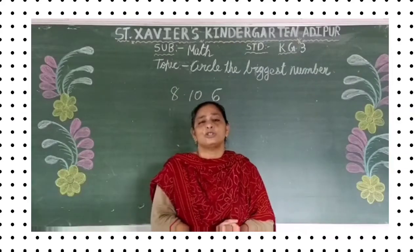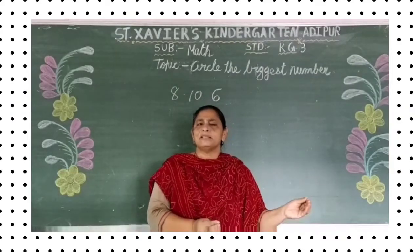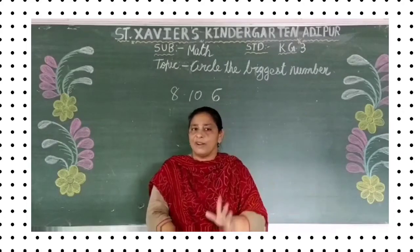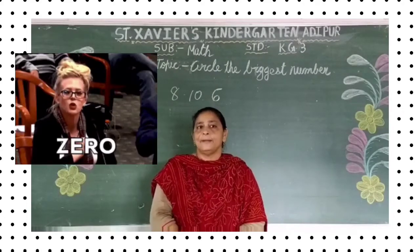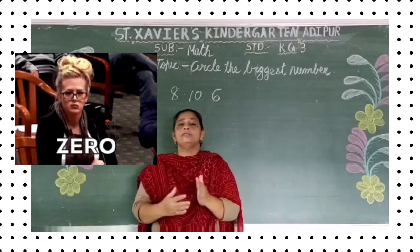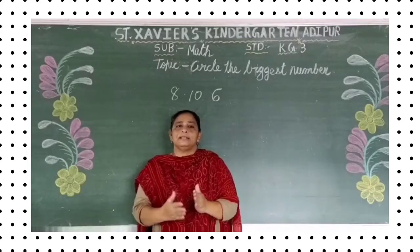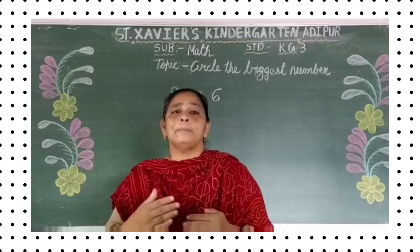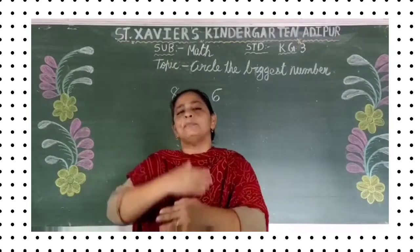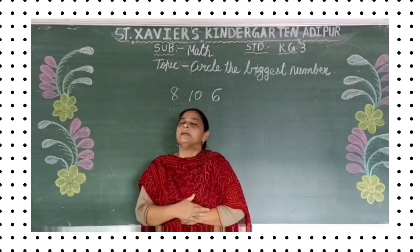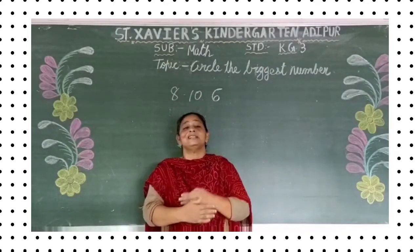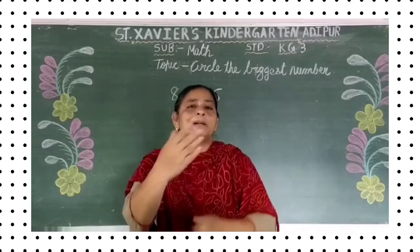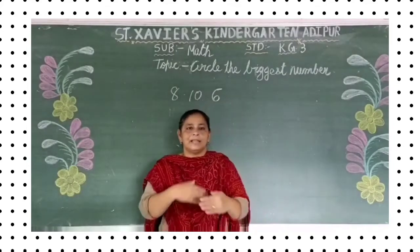Number mein bhi bada aur chota hai. Chota number means kya hai, sabse chota? Yes, zero or one. Hei ki nahi? Forward count jaysse haam kartate hai — one, two, three, four. Toh numbers bade te jate hai ki kam hoote te jate hai? Yes, my dear students — aagye jara hai, numbers bade te jate hai.